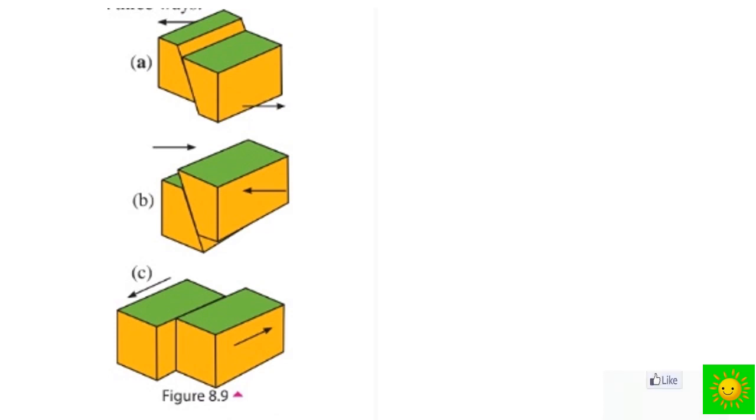Tectonic plates move very slowly, one to two centimeters per year. Plate movements can be recognized on the plate margins. Most of the plate boundaries or margins are at the bottom of the sea. When they occur on land they could be easily recognized. One such plate margin is located in North America.